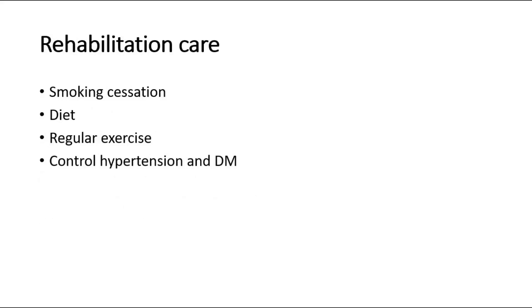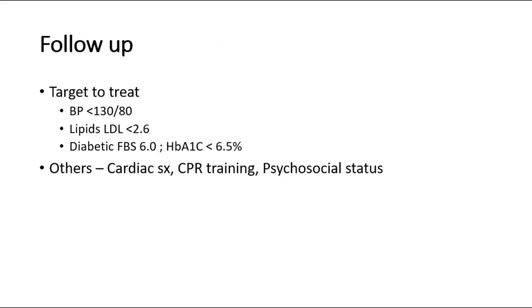Rehabilitation care includes smoking cessation, diet modification, exercise, and control of comorbidities. For follow-up, target BP less than 130/80, LDL less than 2.6, fasting blood sugar 6.0, and HbA1c below 6.5%. That's all for this video. Thank you.